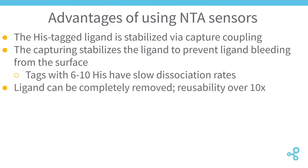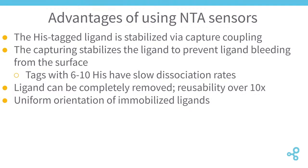Because the ligand is captured rather than covalently bound, the polyhistidine ligand can be removed from the surface and then re-immobilized. If the ligand is decreasing from the surface during a reaction, you can strip the entire surface and re-immobilize your ligand — or even immobilize an entirely different ligand. Research in our lab has shown that you can do this stripping and re-immobilization over 10 times, making these sensors very versatile.